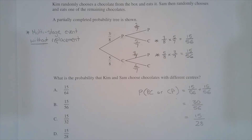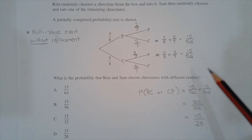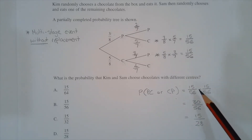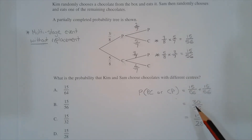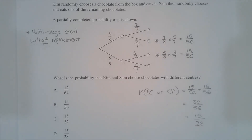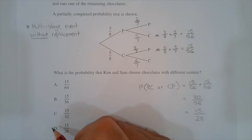So the probability that the two chocolates chosen were of different centres is equal to the sum of these two probabilities: 15 out of 56 plus 15 out of 56, which equals 30 out of 56, and that simplifies to 15 out of 28. Therefore the answer is option D.